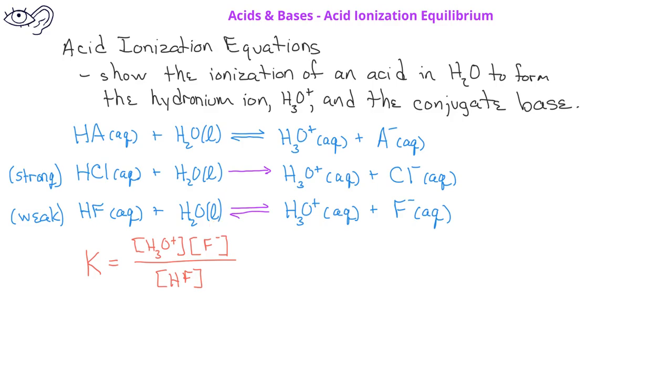In previous equilibrium constant expressions, we had a subscript C for the capital letter K to indicate that we were using concentrations. In these situations, we're going to change the subscript for the equilibrium constant to a lowercase a, and we would call this equilibrium constant the acid ionization constant or the acid dissociation constant.